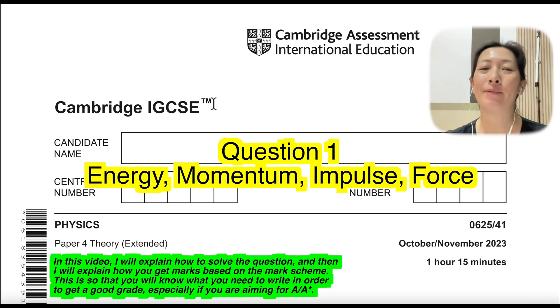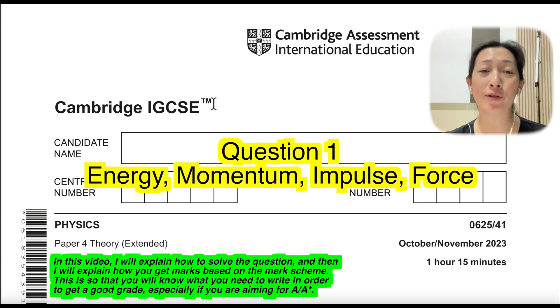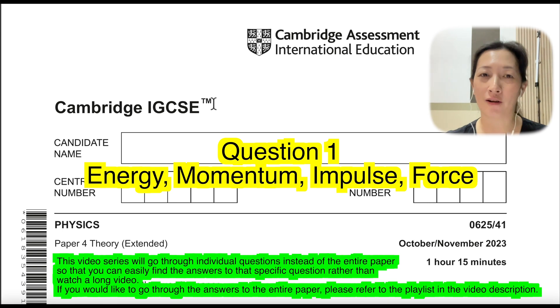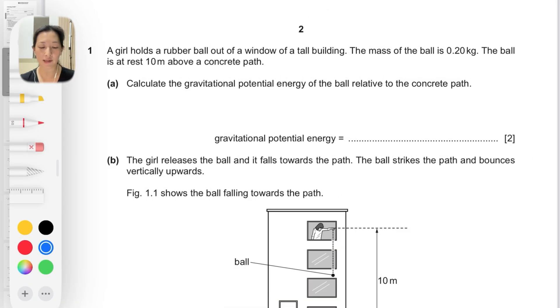Hey everyone, I am your physics teacher. In this video we are going to go through the Winter 2023 paper for theory extended variant 1, question 1. This question covers topics of energy, momentum, impulse, and force. In this question, a girl holds a rubber ball out of a window of a tall building. The mass of the ball is 0.20 kilograms, and the ball is at rest at 10 meters above a concrete path.